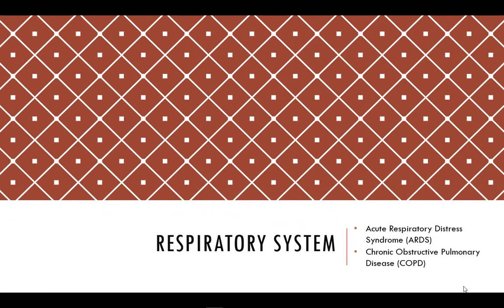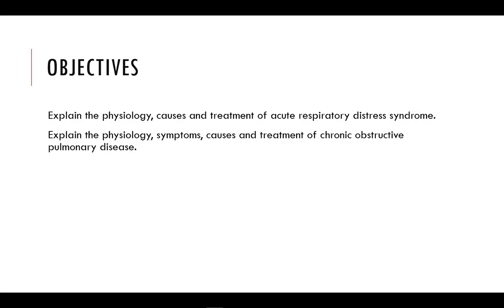The respiratory system is vital to life. We have two primary complications with the respiratory system: one is called acute respiratory distress syndrome and the other is chronic obstructive pulmonary disease. In this video we will explain the physiologies, causes, symptoms, and treatment of both acute respiratory distress syndrome and chronic obstructive pulmonary disease.